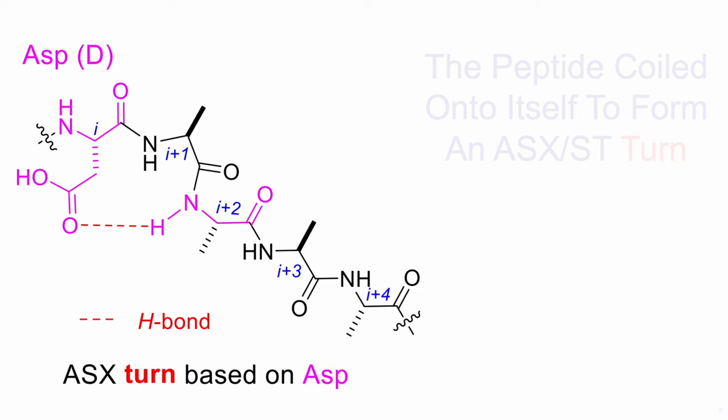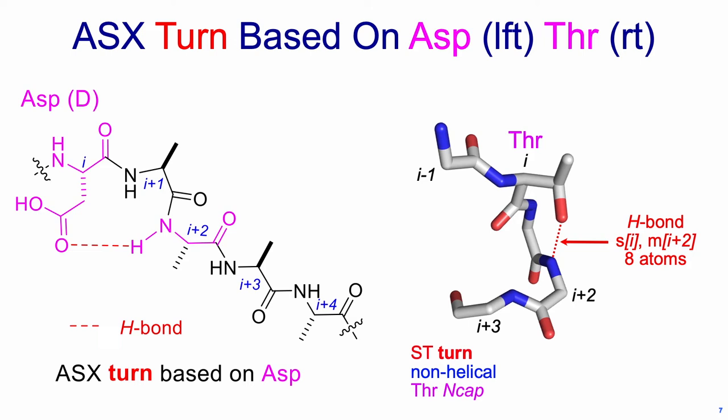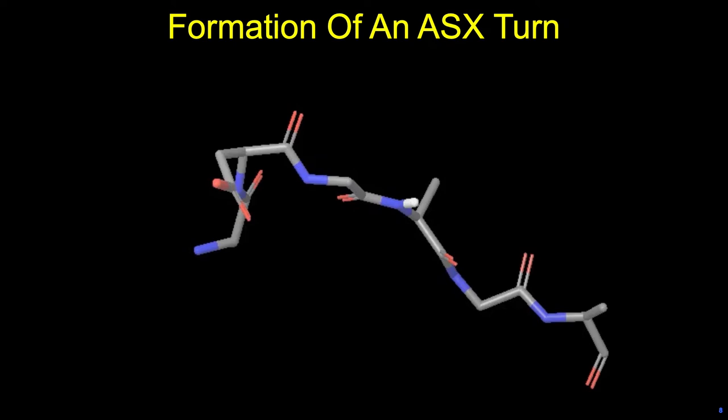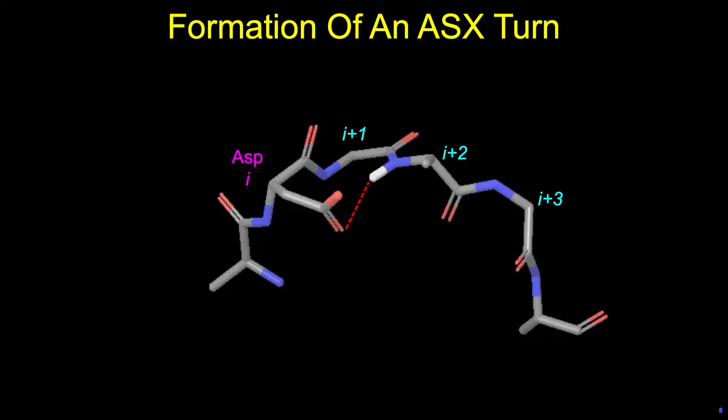That's an example of an ST turn. The threonine is using the side chain oxygen to hydrogen bond to the main chain i+2 residue. That turn is not necessarily helical. Let's watch it forward: we take a linear peptide with explicit water molecules and run molecular dynamics, and eventually we will form that hydrogen bond between the ASP side chain and the i+2 NH.